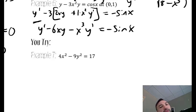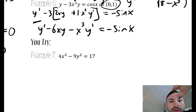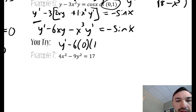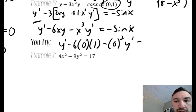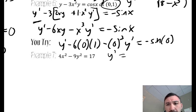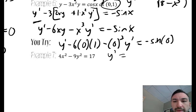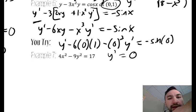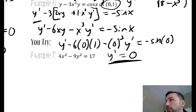We have negative 3 to distribute. This particular question says at the point (0, 1). So plugging in 0 for x and 1 for y — 0 for x again and 0 for x — I get something that looks like y prime minus 0 minus 0 equals the negative sine of 0. At 0, sine is 0. So at that point the derivative is 0. If you graphed that and went to that one point, I can tell you the slope at that instant is 0 — it would have a horizontal tangent line.